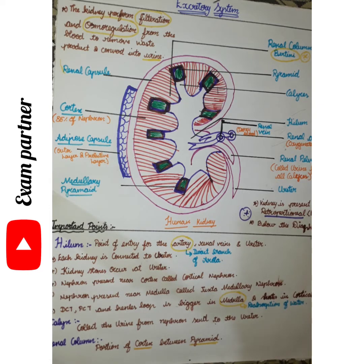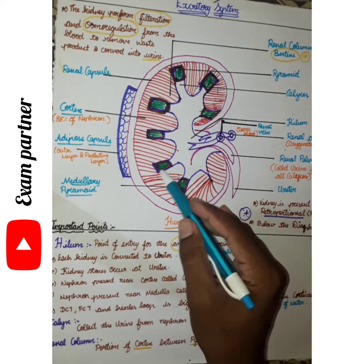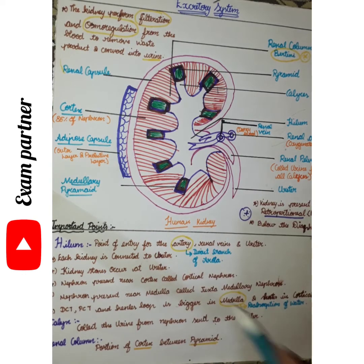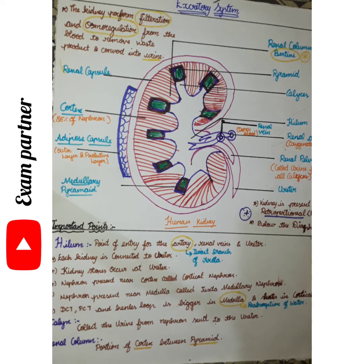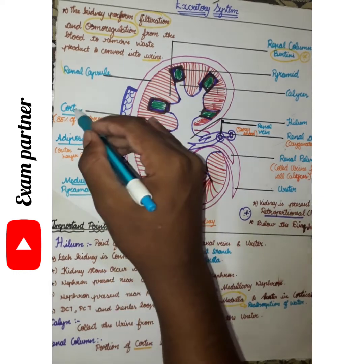85% of nephrons are present in the cortex and only 15% of nephrons are present in the medullary pyramids. Medullary nephrons are not in cortical sites. DCT and PCT are bigger in medullary nephrons, and reabsorption of water is higher there compared to cortex. DCT and PCT are parts of the nephron.